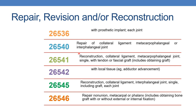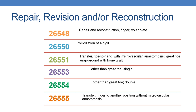The next CPT is 26540: repair of collateral ligament, metacarpophalangeal or interphalangeal joint. Next is 26541: reconstruction, collateral ligament, metacarpophalangeal joint, single, with tendon or fascial graft — previously it was repair, now it is reconstruction. Reconstruction with local tissue of collateral ligament is given by 26542. Next is 26545: reconstruction, collateral ligament, interphalangeal joint. Next is 26546: repair of nonunion, metacarpal or phalanx. Next is 26548: repair and reconstruction, finger, volar plate.